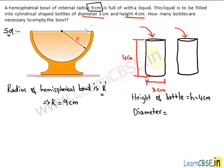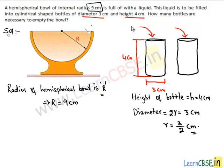Let the diameter of each bottle be 2r, where r is the radius, and it is equal to 3 cm. Therefore the radius is 3/2 cm. We have to find the number of bottles, so we assume n to be the number of bottles.